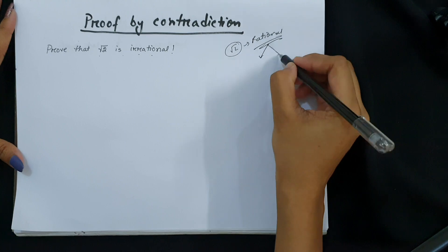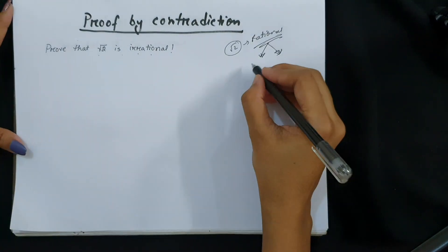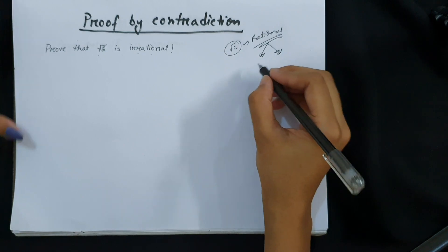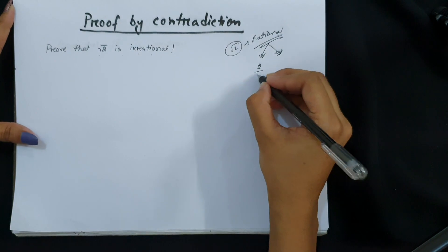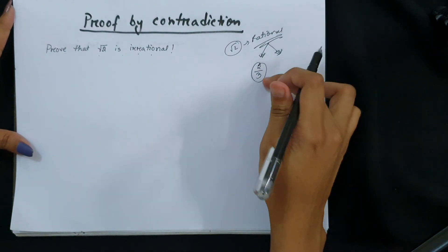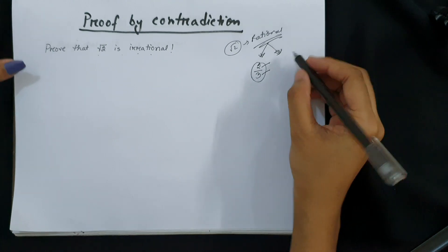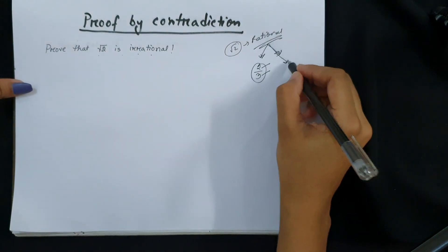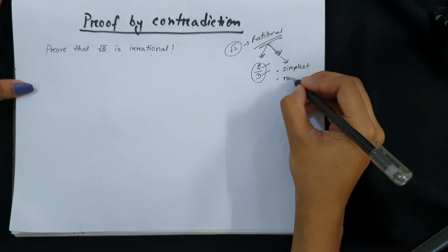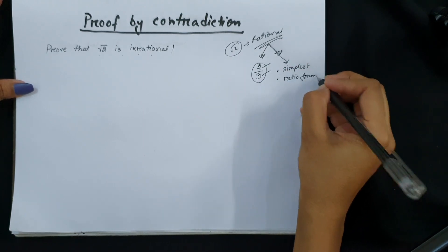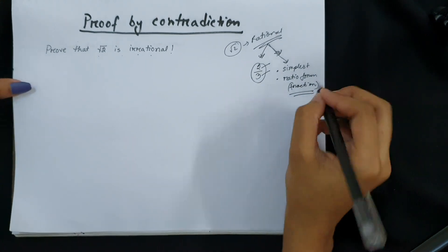So for that we need to understand what is a rational number. For any number to be rational, first of all it has to be in a format so that we can find the ratio of that. For example, if we are writing 2/3, it is a rational number because we can write it in fractions and it has to be in simplest form. So for a number to be rational it has to be in its simplest form and you should be able to write it in ratio form.